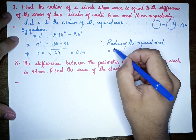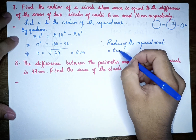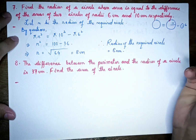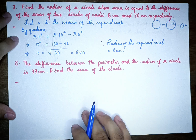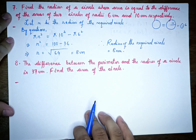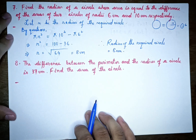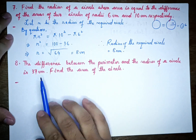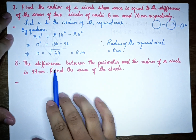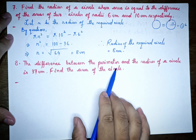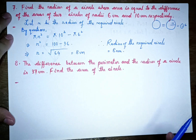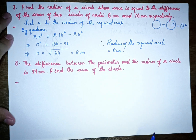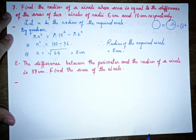The radius of the required circle is equal to 8 cm. Next, question number 8: the difference between the perimeter and the radius of a circle is 37. Find the area of the circle.